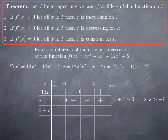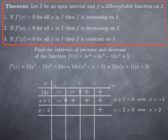Similarly, x − 2 is positive when x > 2, so I put a plus sign to the right of x = 2 corresponding to (2, ∞). It is 0 at x = 2, and it is negative when x < 2, so I put negative signs in the other columns corresponding to x < 2.